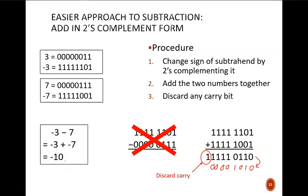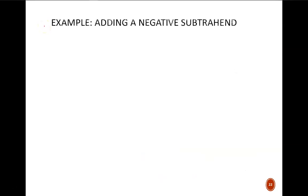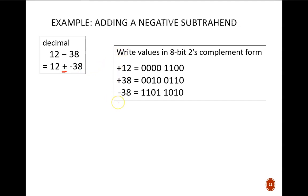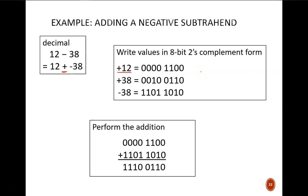I hope you see the advantages of this approach over the longhand subtraction method. This final slide is simply another example of the same process. First, we are given the problem in decimal, and we reframe our thinking into an addition. Then we write the corresponding values in 2's complement form. Note that we did not compute the value for negative 12, because we don't need it. Lastly, we add the values for positive 12 and negative 38, producing this final sum. If we were to convert this sum into decimal, we'd find a value of negative 26, just as we expected.